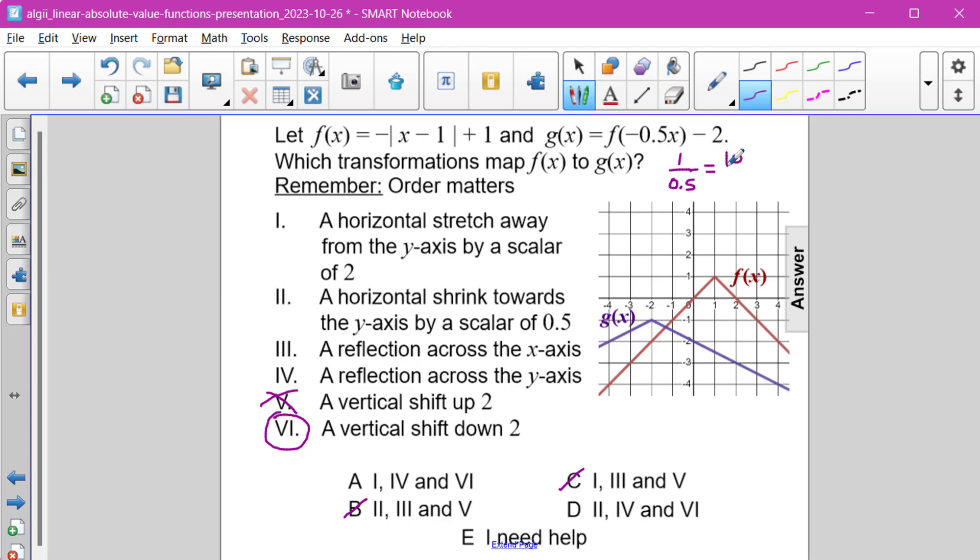That would give us 10 over 5. In other words, it moves the decimal point 1 unit to the right. And then if we reduce it, we end up getting 2. So we're going to have a horizontal stretch away from the y-axis by a scale factor of 2.